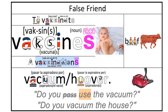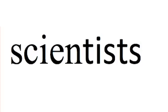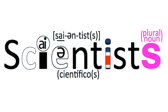Vaccinations are the act. To vaccinate is the verb and a vaccine is the product. We do not say scientifics. The people are called scientists. This part is very difficult for Spanish students, so make sure you practice it.